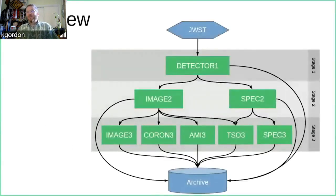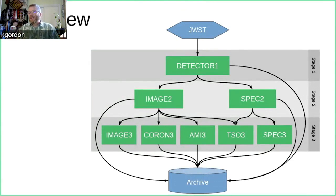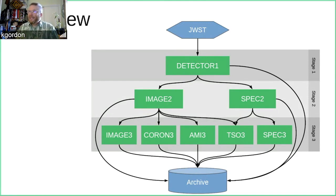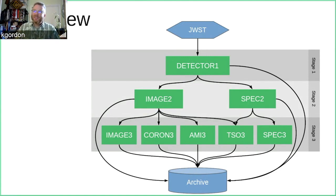Here's an overview of the pipeline structure. We get data from JWST and it runs through three stages, with many products put into the archive both at the end of all three stages and at each individual stage. The first stage works on detector artifacts, trying to remove and correct for them. The second stage splits into different kinds of observations — imaging versus spectroscopy — and does different kinds of processing based on the type of data.